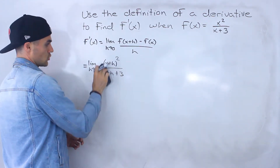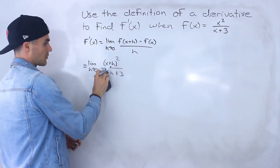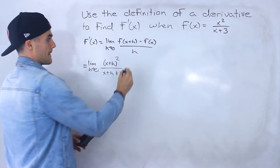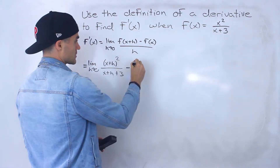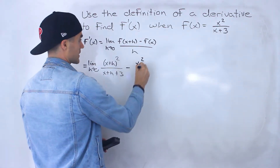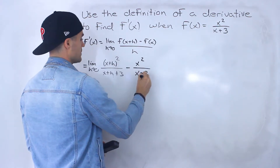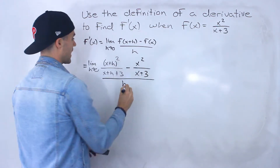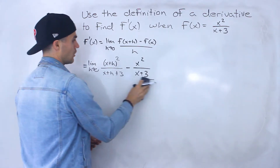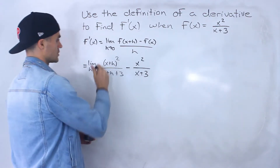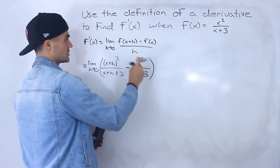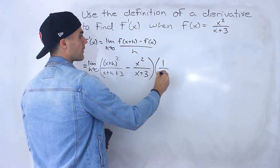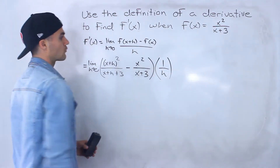And because there's no coefficient in front of the brackets, we don't need to put the bracket there, minus f of x, which is x squared over x plus 3, and this is going to be all over h. Instead of putting it all over h, I'm going to take this entire numerator and multiply it by 1 over h.